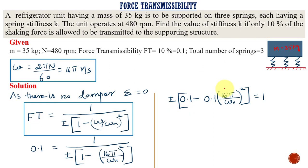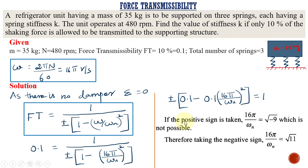We have substituted these values and moved terms to one side. Multiplying 0.1 through gives: 0.1 minus 0.1 times (16π/ωₙ)² equals 1. There is a plus or minus sign, so we get two different values — one for the positive case and one for the negative. Taking the positive sign first gives 16π/ωₙ equal to the square root of minus 9, which is not possible because the value inside the root is negative. So this solution is rejected.